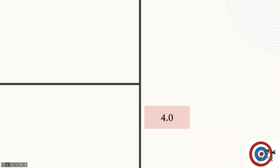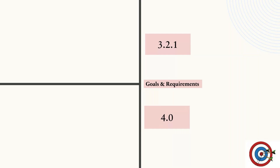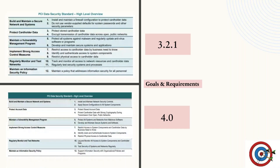We have two versions of the standard available: version 4.0 and version 3.2.1 — both have goals and requirements. Looking closely at the goals, only a few wordings have changed. For example, the first goal in 3.2.1 says 'build and maintain a secure network and systems' with reference to cardholder data, whereas 4.0 references account data — but the essence is the same. The first goal focuses on establishing a secure network infrastructure using firewalls, secure configurations, and regular patching.